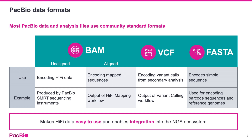File formats that you will see referenced in PacBio datasets and bioinformatic workflows include BAM, VCF, and FASTA. BAM files may contain unaligned or aligned sequences. PacBio instruments deliver data as unaligned BAM files, while some secondary analysis, like SmartLink's HiFi mapping workflow, produce aligned BAMs. VCF files containing variant calls are similarly included as outputs of some analyses, like SmartLink's variant calling workflow. Finally, FASTA formatted sequence files are used for encoding barcode and reference genome sequences as input.